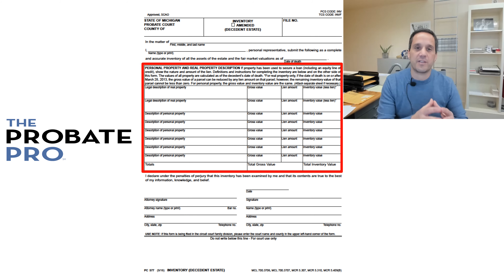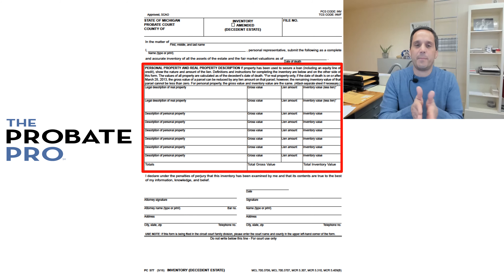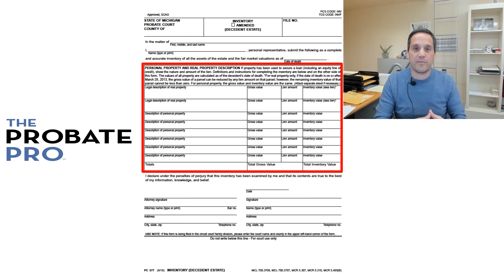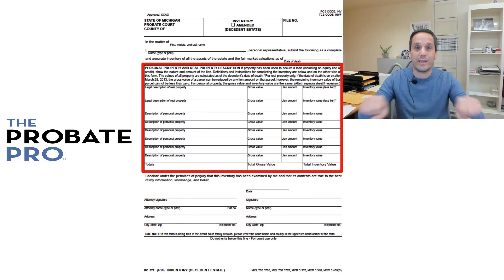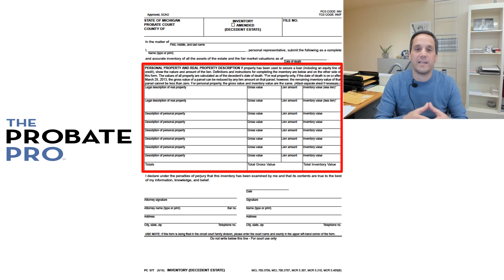The crux of this document is the larger section highlighted in red, where you identify assets of the decedent. That means an asset that has no joint owner, an asset that has no named beneficiary, and an asset that is in the individual name of the decedent. For example, if the asset was in a trust that wouldn't go on this form; if an asset was jointly held with another person it wouldn't go here either; nor would a life insurance policy with a named beneficiary. Any asset in the individual name that doesn't meet those criteria would be listed here.